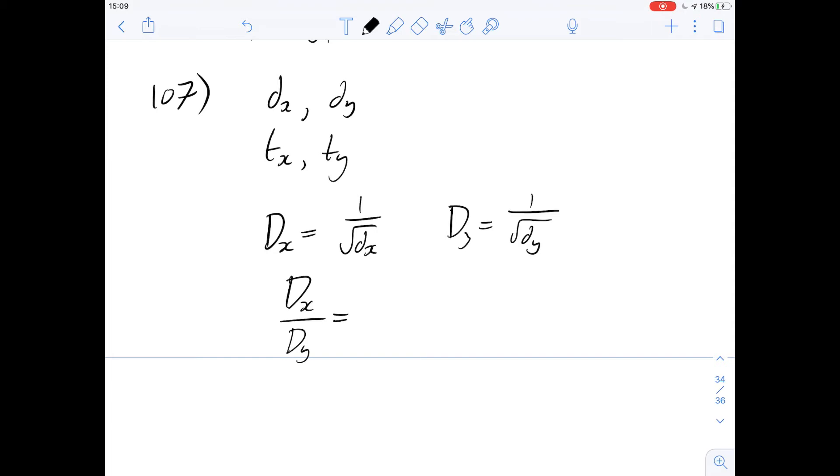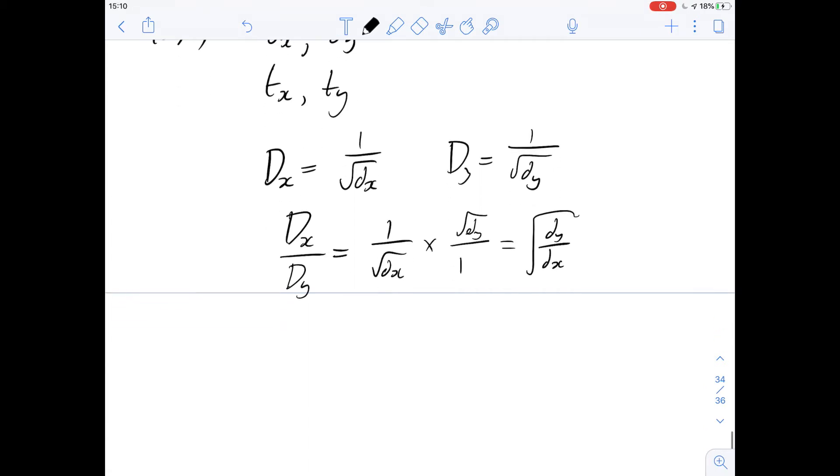So if we divide dx by dy, sorry, the rates here, then we get 1 over dx and we're going to multiply it by dy over 1 and we end up with this ratio and it's going to be the density of y divided by the density of x and the square root of this.